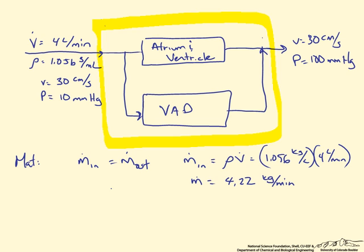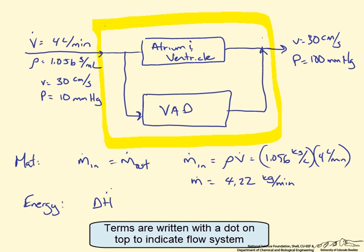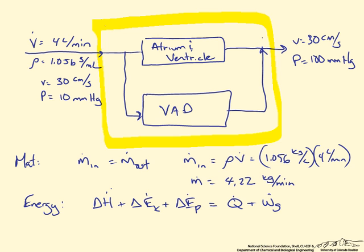Now if we write a general energy balance we know that energy can't be destroyed nor created, and we are going to write it as the change in enthalpy plus the change in kinetic energy plus the change in potential energy is going to be equal to the amount of heat transferred to the fluid plus the amount of work done on the fluid.